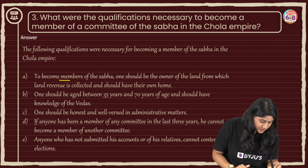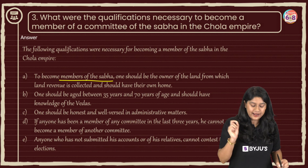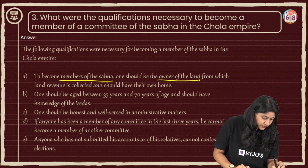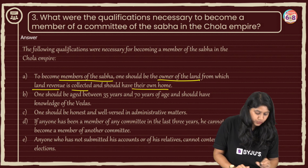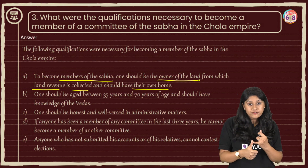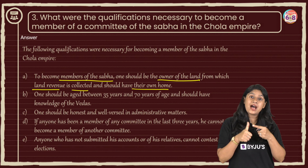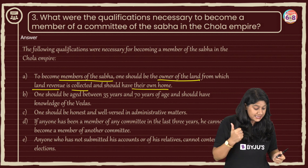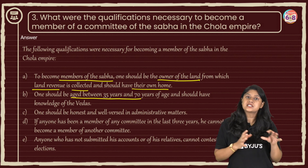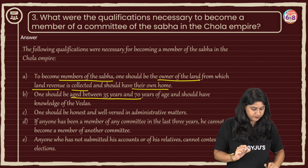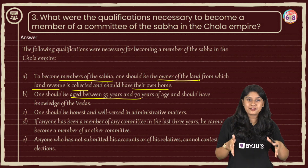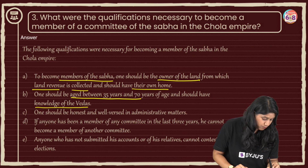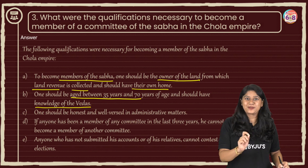First, if someone has to become a member of the Sabha, one should own land — they should be the owner of land from which land revenue is collected, and should have their own home. Two important conditions: they should have their own land and their own home from which they can collect revenue. Second point: they should be aged between 35 to 70 years of age — this is very crucial. Apart from that, they should also have knowledge of the Vedas.